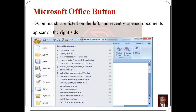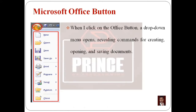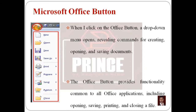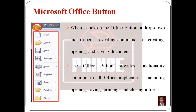When you click on the Office Button, it opens a drop-down menu. This menu contains commands and tools for creating, opening, and saving documents. The Office Button provides functionality common to all Office applications, such as New, Open, Save, Print, and Close.